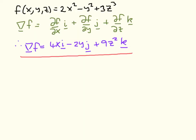For the third question, this is our scalar field and our definition of the gradient. In the X direction with the I unit vector, we differentiate with respect to X and we get 4X (the other terms give 0). In the J direction, we differentiate with respect to Y: here we get 0, then minus 2Y, and 0 — so overall minus 2Y.